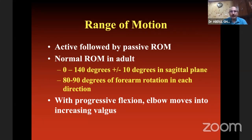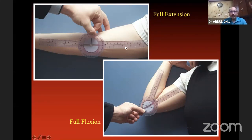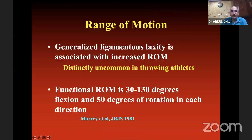To measure exactly in degrees: on the lateral aspect, put the goniometer center on the joint level just distal to the lateral epicondyle. Keep one limb of the goniometer fixed — the proximal limb — and move the forearm with the distal wing of the goniometer, which yields the particular degree you can document. At times, generalized laxity of ligaments is associated with increased range of motion, which is distinctly uncommon in throwing athletes.